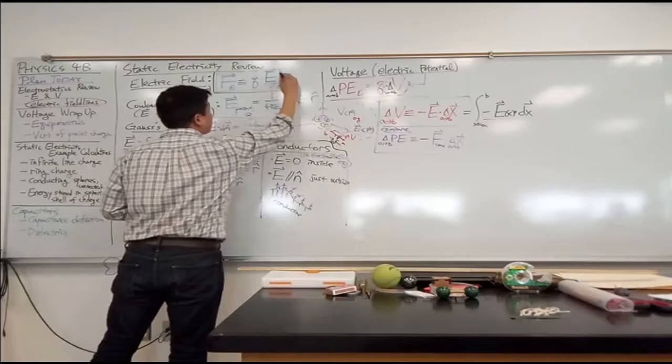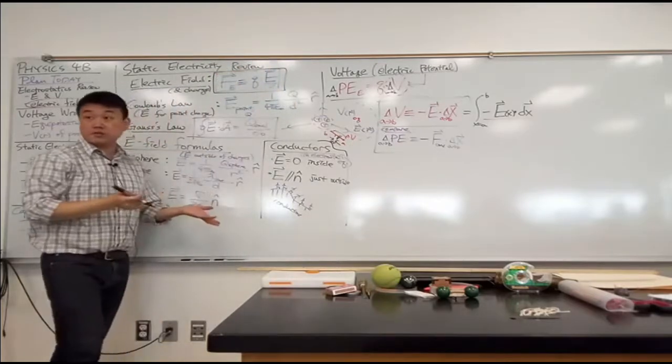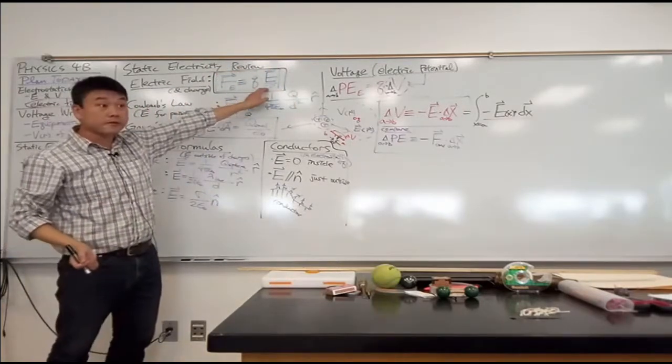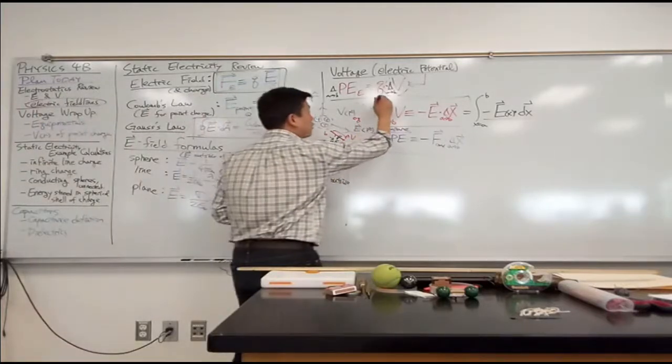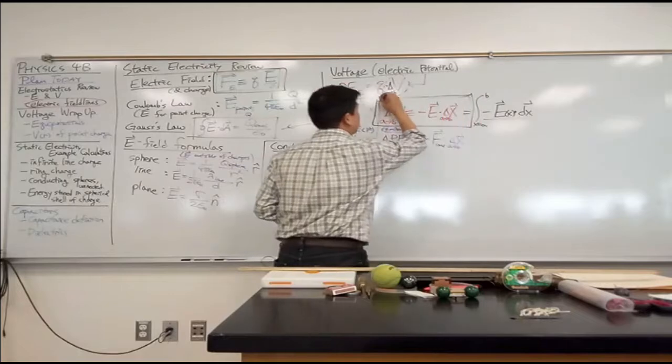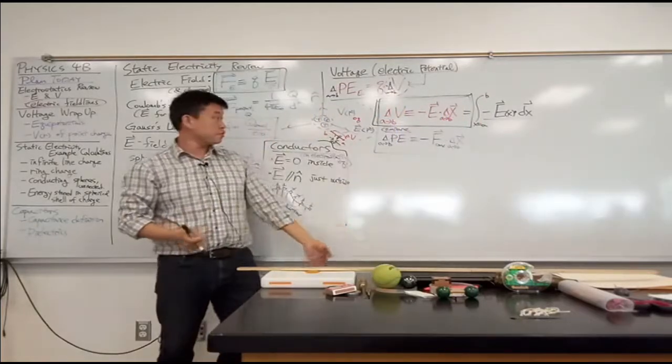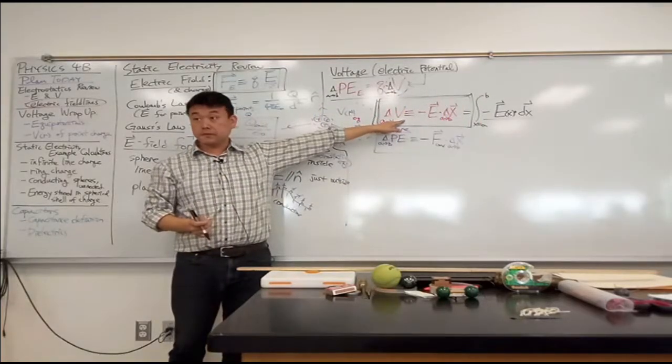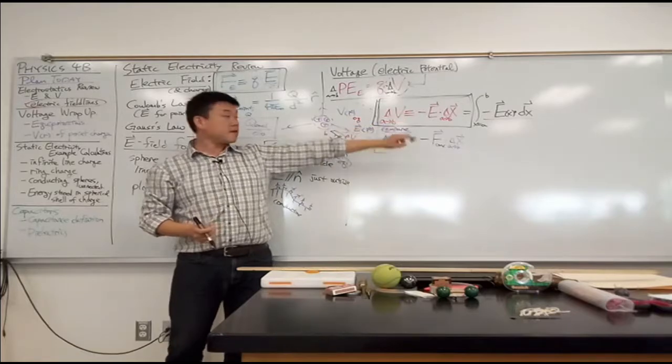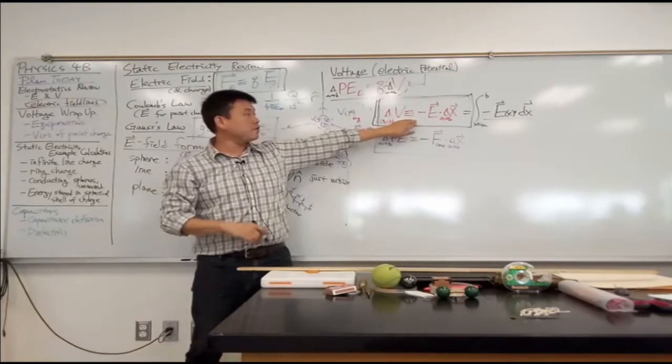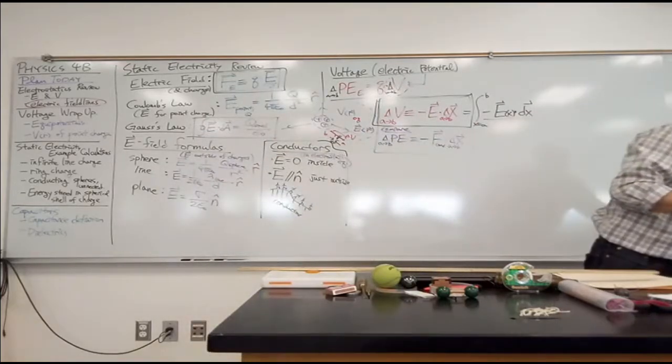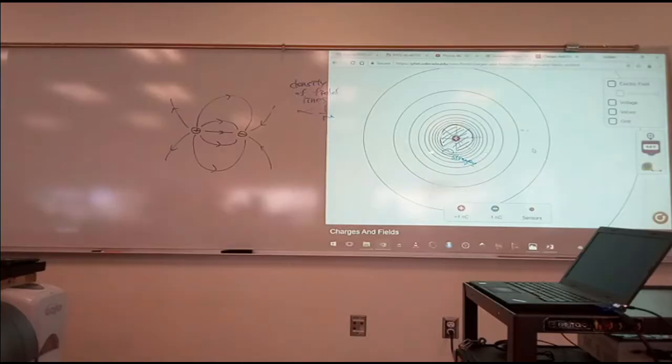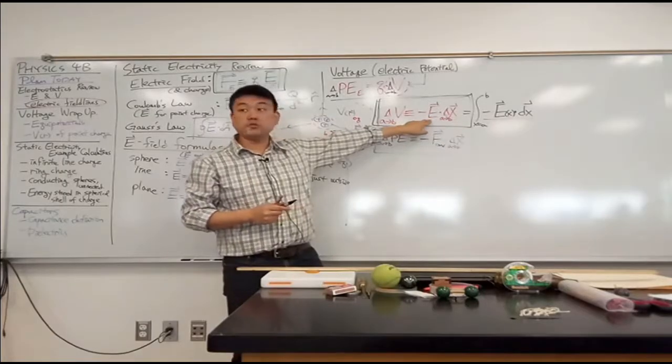So the thing you should fall back on, whenever you feel like you're struggling with something, whenever you're struggling with electric field, you should fall back to the definition. Whenever you feel like you're struggling with the relationship between electric field and potential, you should fall back on the definition. So based on this definition, how can you argue that where the equipotential lines are spaced closer together, that somehow the electric field should be stronger?